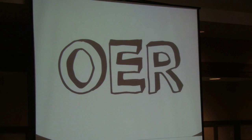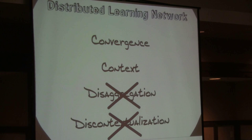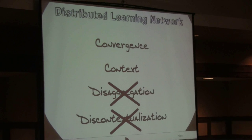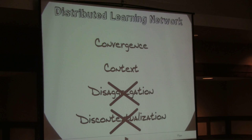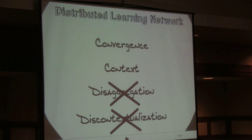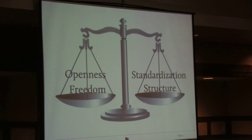However, as we marvel over this increasingly distributed learning network that is emerging, we at Sailor are constantly reminding ourselves of the importance of convergence, of the importance of context. We can't expect students to master concepts when the information is so disaggregated. And so we in the OER community find ourselves in this difficult place — torn between the desire to be completely free and open, and the need for more structure and standardization. Somewhere along this continuum of tension, we need to find models that embrace and, to some degree, balance these two opposing forces.